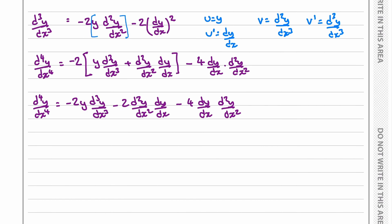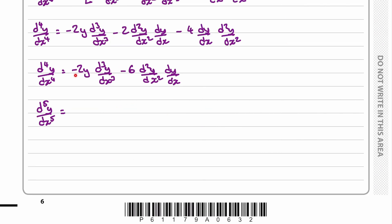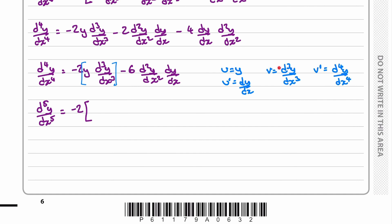Multiplying out the brackets gives negative 6 lots of those terms, and now we have d⁴y/dx⁴. To find the fifth derivative, we differentiate one more time. We have the negative 2, and then use the product rule: let u equal y, differentiate to get dy/dx, let v equal the remaining term, and differentiating gives d⁴y/dx⁴. We substitute these in.